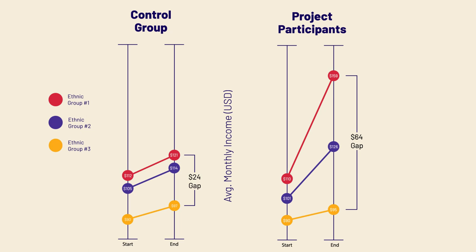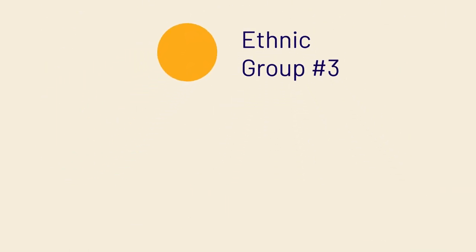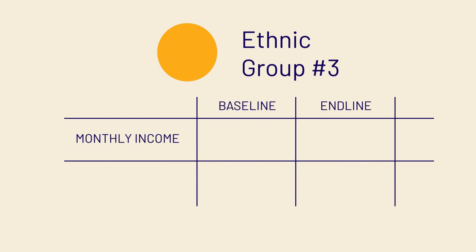Imagine that you're part of ethnic group number three. The average monthly income did go up from 90 to 95 dollars, but that's actually slightly worse than what happened to the farmers in the control group, whose average went up to 97 dollars.